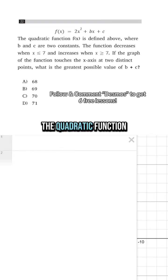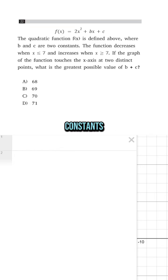We are asked: the quadratic function f(x) is defined above where b and c are two constants. The function decreases when x is less than or equal to 7 and increases when x is greater than or equal to 7. If the graph of the function touches the x-axis at two distinct points, what is the greatest possible value of b plus c?